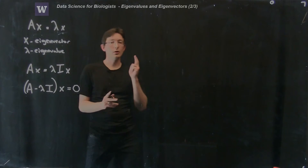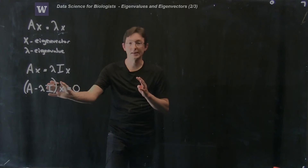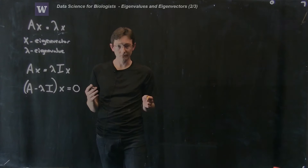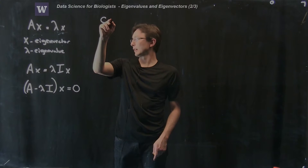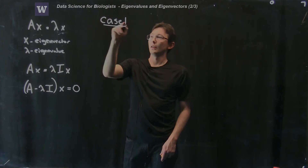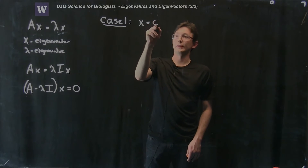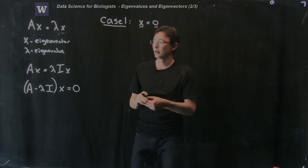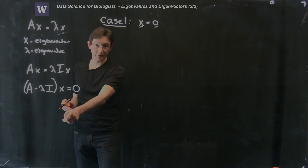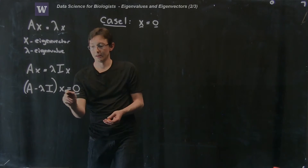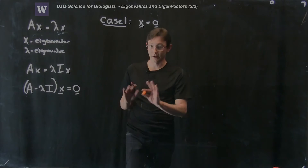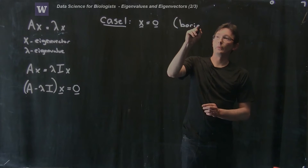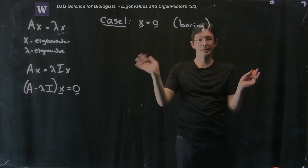This is the basic system we're going to try to solve — we're going to solve for lambda and for x. There are two generic cases where this might be true. Case one is that my vector x could be equal to zero — a vector of all zeros. If I multiply any matrix by a vector of all zeros, I get a vector of all zeros out. But this is boring — we're looking for special directions x, and zero is not a direction.